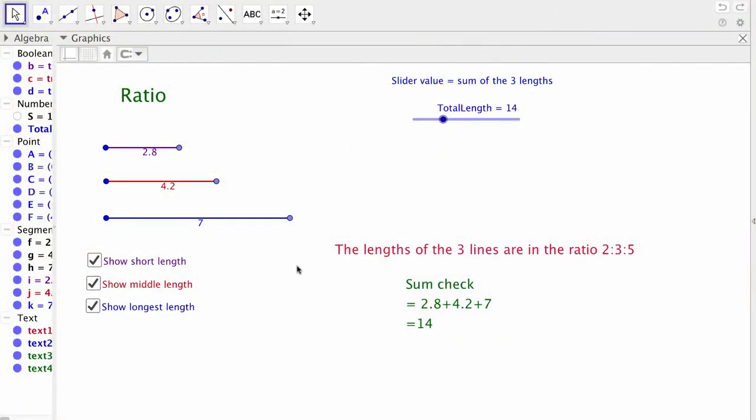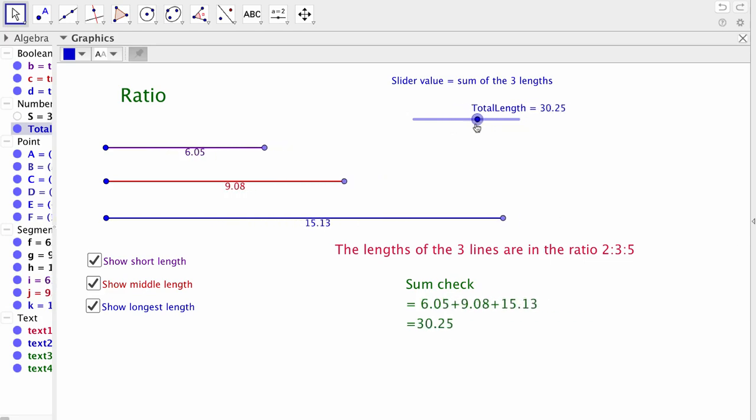This file is based on ratio - I think it's worth looking at. There are some interesting aspects to it. This is for junior maths and not related to graphing or geometry. The slider value is the sum of these three lengths, and the three lengths are in the ratio 2:3:5. Do students actually know what that means?